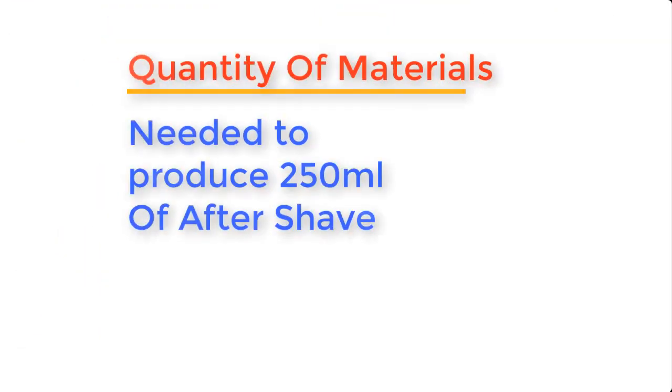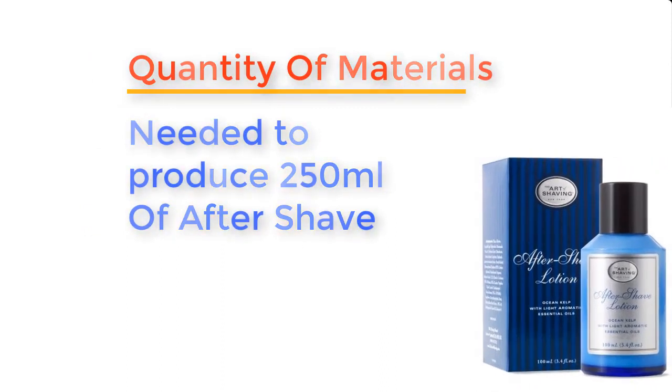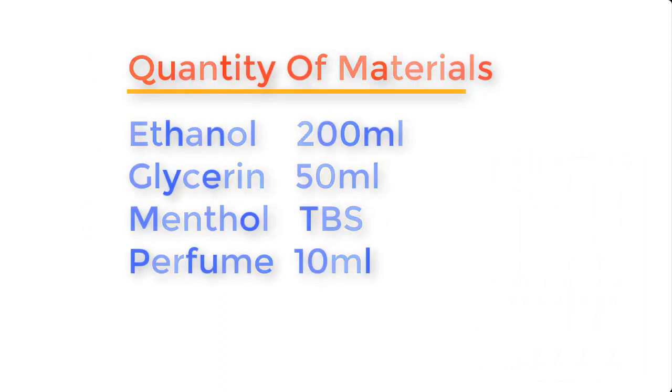To produce about 250 ml of aftershave, the quantity of materials needed are 200 ml of ethanol, 50 ml of glycerin, a tablespoon of menthol, and 10 ml of perfume.